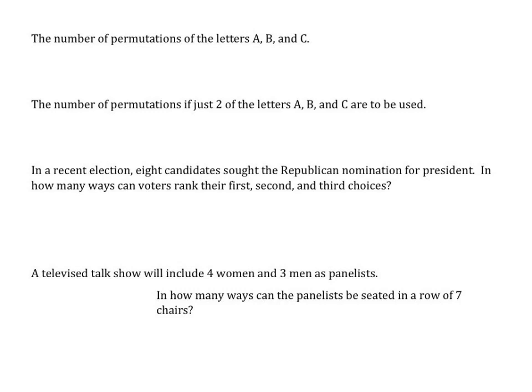We also have a rule: if we want to find the permutation of a number in itself, it's equal to that number's factorial. For example, the number of permutations of the letters A, B, and C — that's P(3, 3). How many ways can they be ordered? That's simply three factorial, which equals three times two times one, which is six.